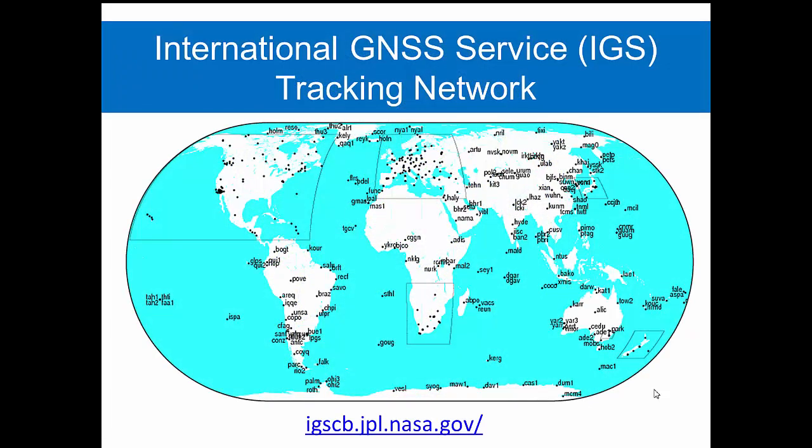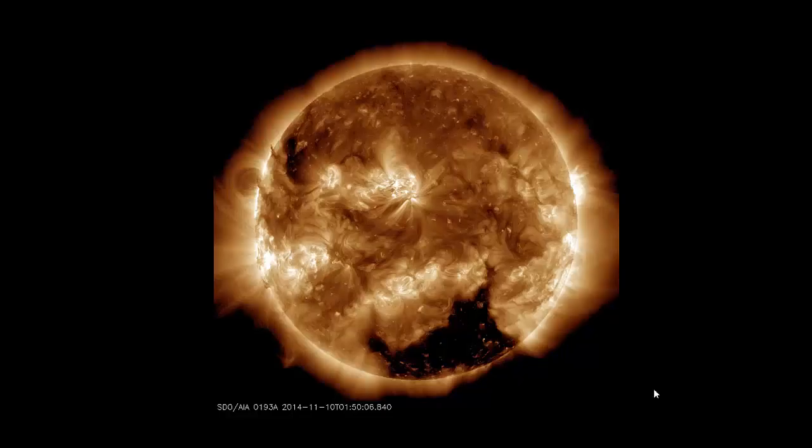The International GNSS Service is a consortium of member nations whose GNSS tracking sites are shown on this map. They collect as-flown positions of the satellites, which will be different from their predicted positions. Why? Well, one is variations in the earth's gravitational field from place to place, and second are the magnetic forces placed on the satellites by the influence of the sun.